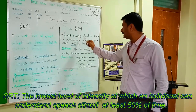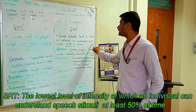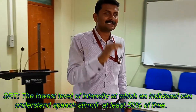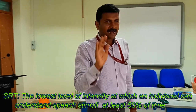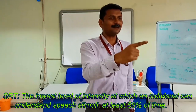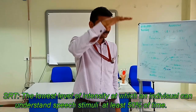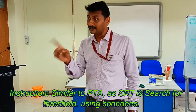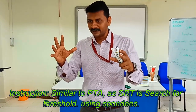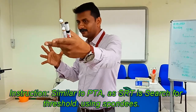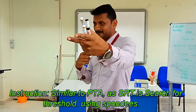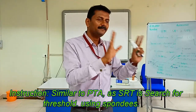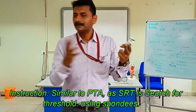The next test is SRT, which defines the lowest intensity level at which an individual can understand speech at least 50% of the time. Here the cognitive demand has increased — the person has to understand and speak out the words. The instruction is similar to pure tone audiometry: 'I am going to give you some speech stimuli; you have to repeat them back. Try repeating even if you want to guess.'